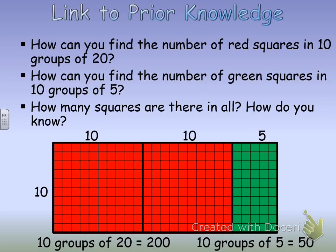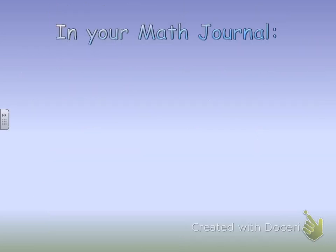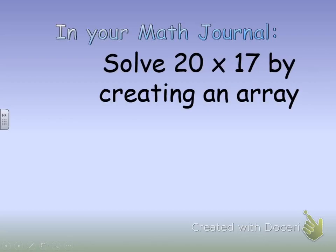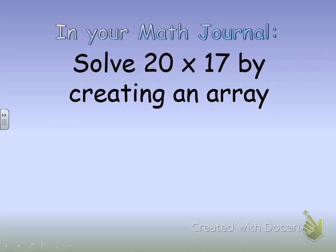How many squares are there in all? I broke apart the whole number, but it's important to bring it all back together by adding them. So my total will be 250. In your math journal, using the other portion of your grid sheet, solve 20 times 17 by creating an array. Break it apart in whatever way you can to solve it, and be sure to add everything back together at the end to find your total.